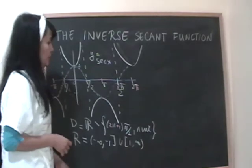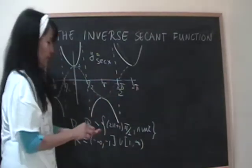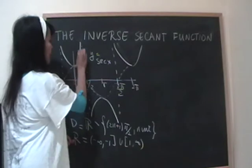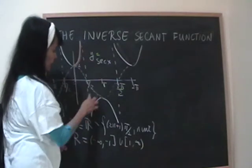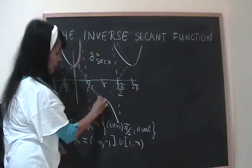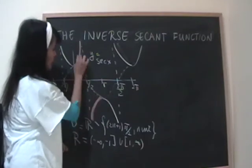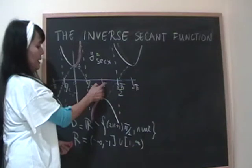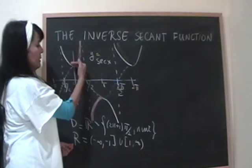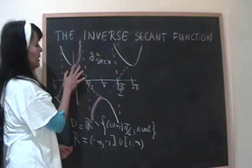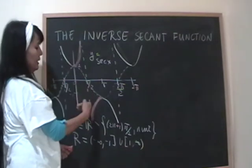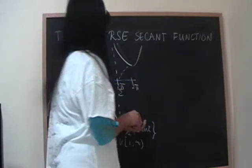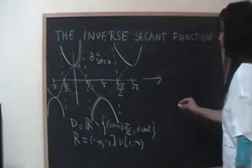For cosine, we took the interval zero to π. For secant, we do the same thing — we choose the interval zero to π. However, at π/2 the secant function is undefined, so there's a gap there. Looking at both pieces of that interval, excluding π/2, we can grab all the range values: one to infinity and negative infinity to negative one.